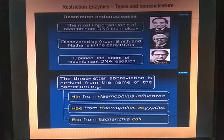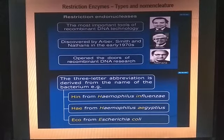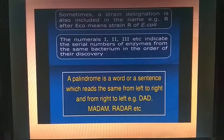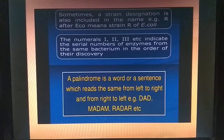For example, HIN is from Haemophilus influenzae, HAE from Haemophilus aegyptus, and ECO from Escherichia coli. Sometimes a strain designation is also included in the name — for example, R after ECO means strain R of E. coli.